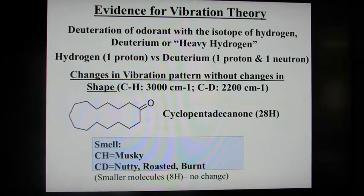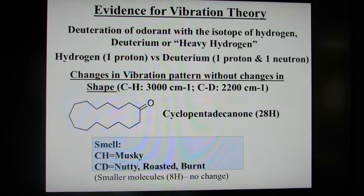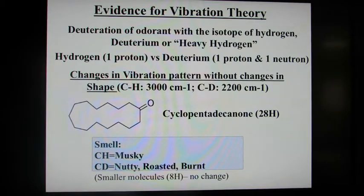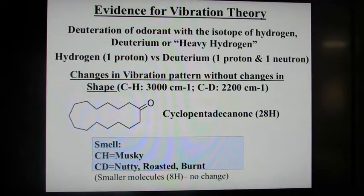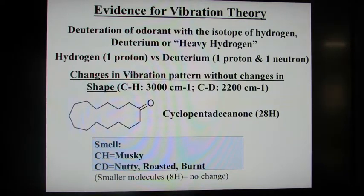Another piece of evidence is deuteration. You can replace hydrogens in a molecule with deuterium — hydrogen has one proton, while deuterium has a proton and a neutron, making it heavy hydrogen. This causes dramatic changes in vibrational patterns: the CH stretch is at 3,000 wavenumbers, whereas the CD stretch is at 2,200. As a result, you get a difference in the odor of the molecule. Even though the shape is exactly the same for cyclopentadecanone, the deuterated molecule gives a nutty, roasted, burnt smell, whereas the hydrogen molecule gives a musky smell — showing that the difference in vibration causes the difference in smell.